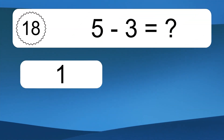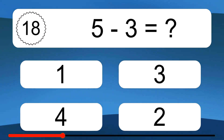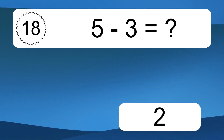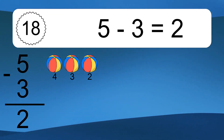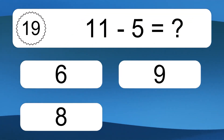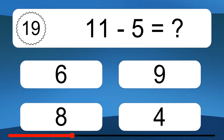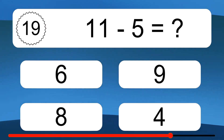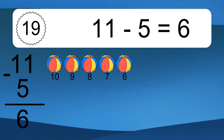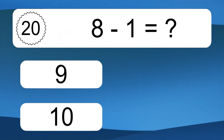5 minus 3 equals what? 5 minus 3 equals 2. Let's count it. 4, 3, 2. 11 minus 5 equals what? 11 minus 5 equals 6. Let's count it. 10, 9, 8, 7, 6.